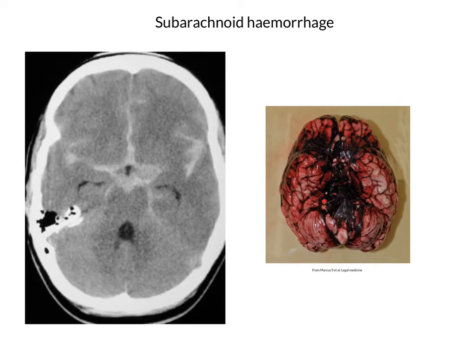These spaces in the subarachnoid space which get filled with blood are called the basal cisterns. These are CSF-filled spaces at the base of the brain — all these irregular places at the base of the brain which get filled up with blood after a subarachnoid haemorrhage.